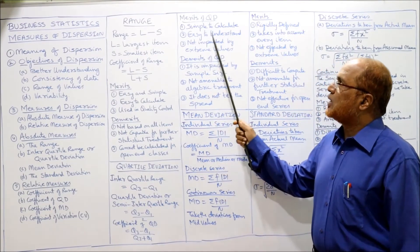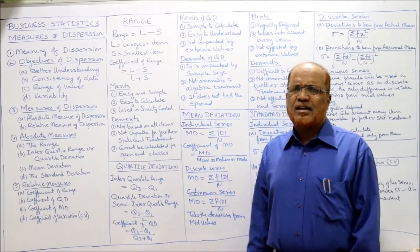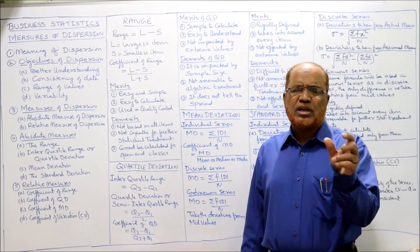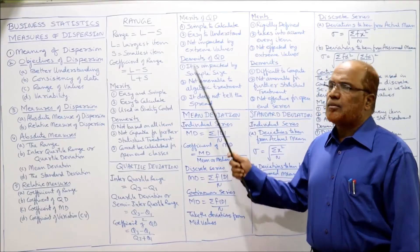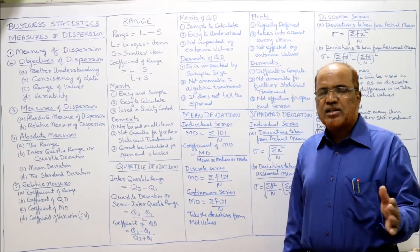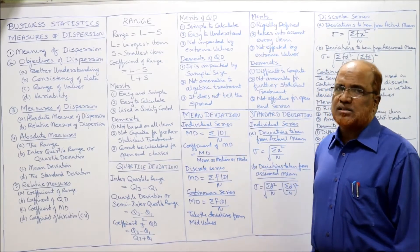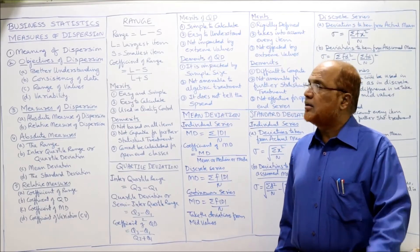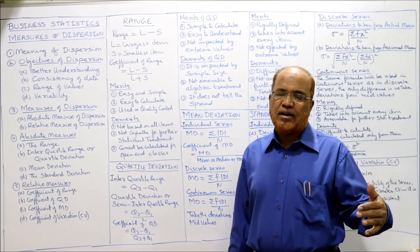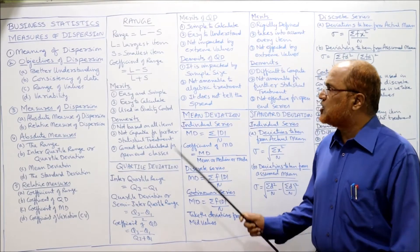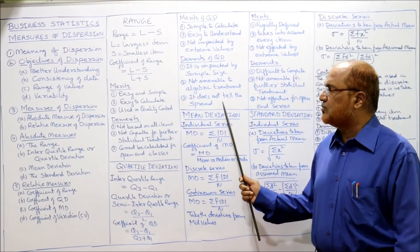Merits of quartile deviation: it is simple to calculate, easy to understand, and not impacted by extreme values. If you know how to calculate Q1 and Q3, you can easily find quartile deviation. The extreme smallest or largest values do not affect it. Demerits: it is impacted by sample size, not amenable to algebraic treatment, and it does not tell the spread — meaning the difference between the highest and the lowest values.